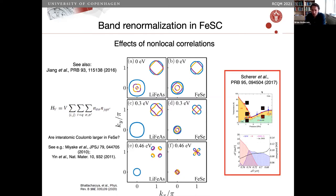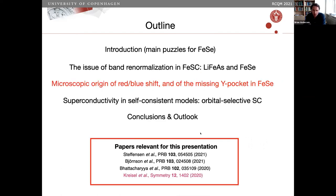We used this mechanism to calculate the pressure dependence of these interaction parameters, to try to come up with a possible explanation for the phase diagram of how nematicity, superconductivity, and magnetism change with pressure.